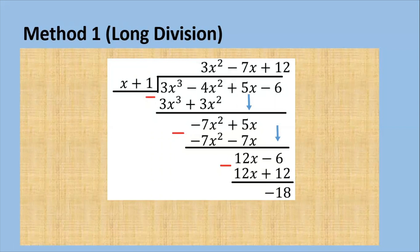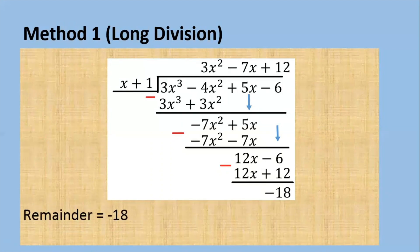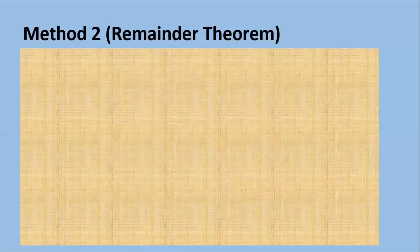Do we stop here? No, because you can divide it again. So 12x divided by x gives 12. Then we multiply 12 by x plus 1 to get 12x plus 12, and then we subtract. 12x minus 12x is 0. Minus 6 minus 12 is negative 18. So we will get a remainder of negative 18. This is a rather long procedure, so now let's see with the remainder theorem.